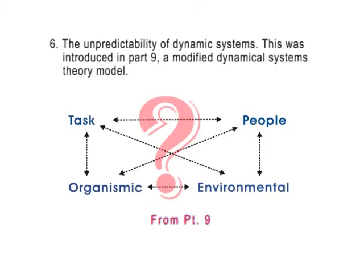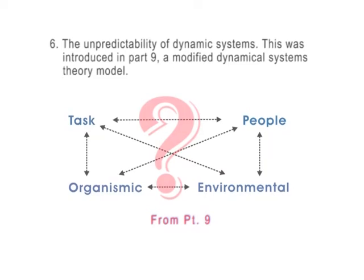Number six, the unpredictability of dynamic systems was introduced in part nine. Finally, there's the disconnect between the ends and means. When they don't match, it's like trying to fit a square peg into a round hole.